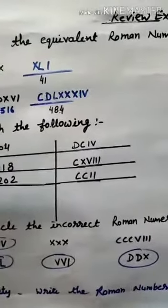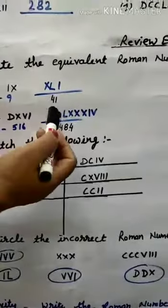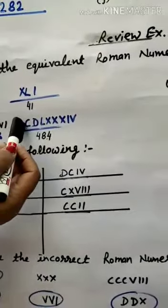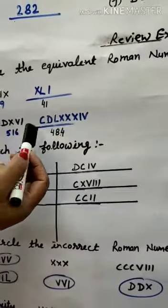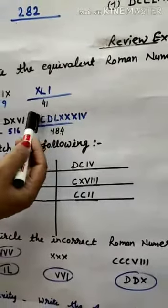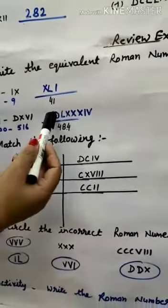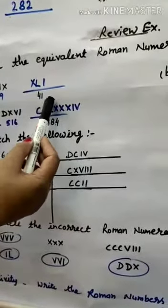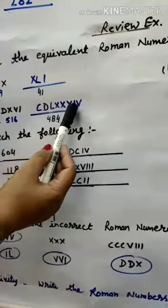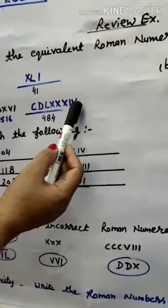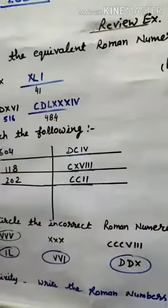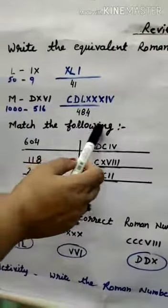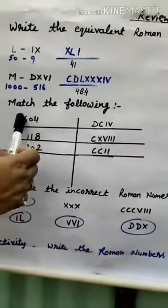To write 484 in Roman Numerals: CD for 400 (C written to the left of D, subtracting 100 from 500). Then for 80, write L with three X's (LXXX). Then IV for 4. So 484 is written as CDLXXXIV.